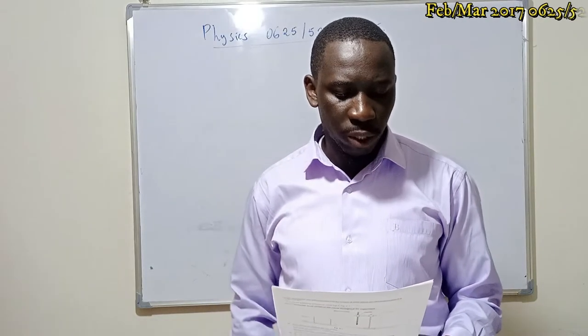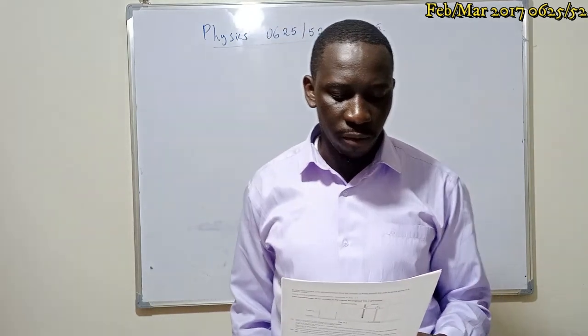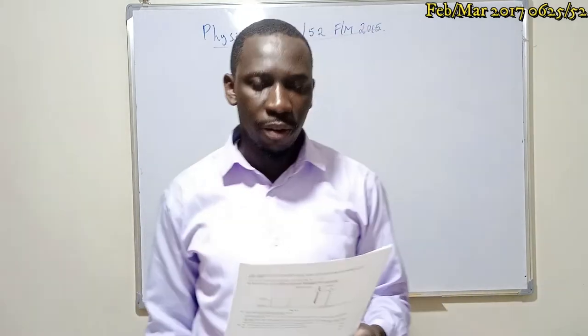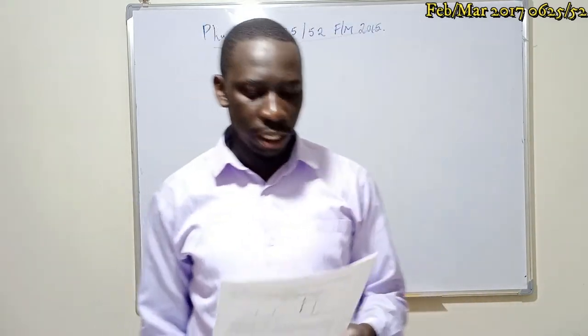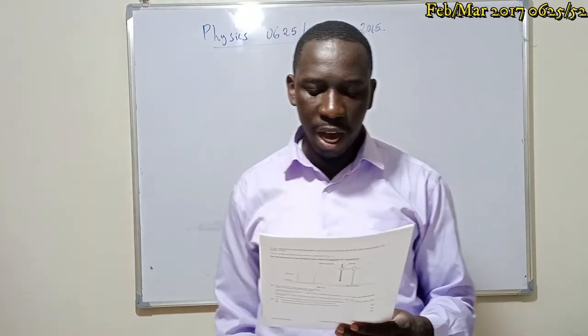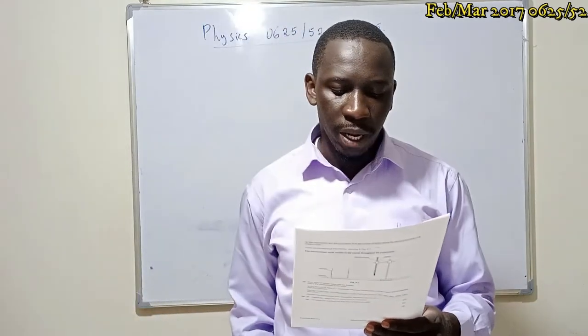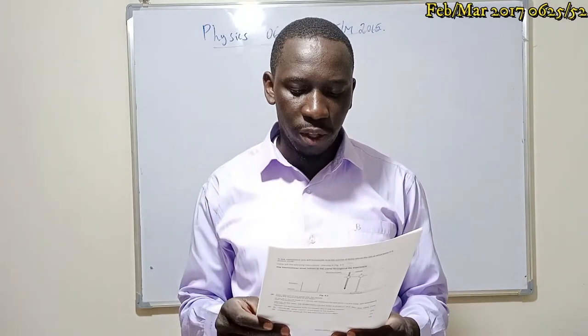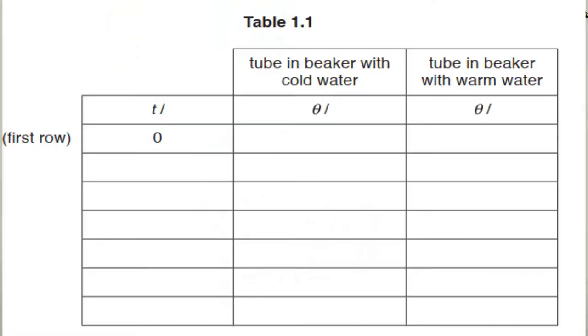Carry out the following instructions referring to figure 1.1 as you can see on your screen. Part A: Pour 200 cubic centimeters of cold water into the beaker. Record the temperature theta 1 of the water in the beaker. Pour hot water into the boiling tube until it is about half full. Gently place the thermometer into the boiling tube. Place the boiling tube into the beaker of water. Record in the first row of table 1.1.